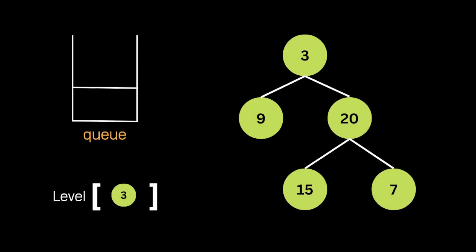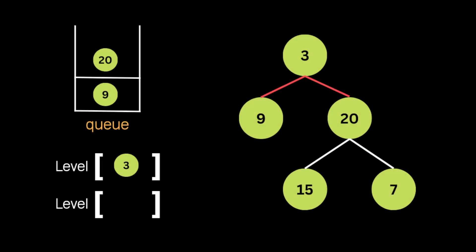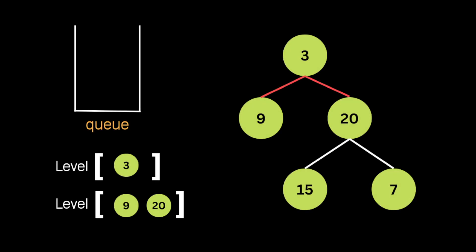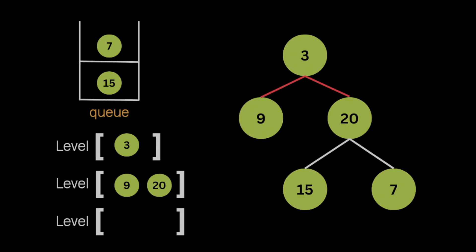The first thing we do is iterate through the queue and pop the root node, adding it to the level array. Then we move to the left child of the root, check if it exists, and append it to the queue. We do the same for the right child. We repeat this process — at each iteration we pop the first node using the FIFO technique, so we pop node 9 and add it, then the node with value 20.